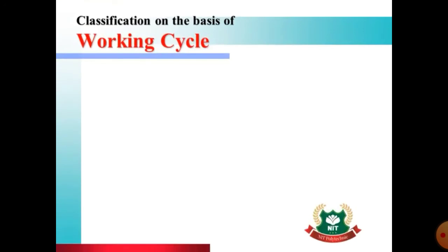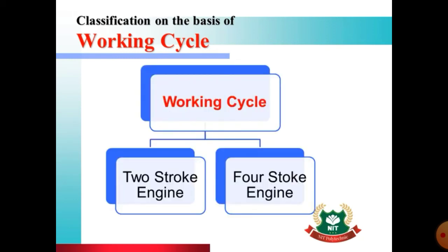On the basis of working cycle, engines are classified into two main categories: two-stroke engines and four-stroke engines. The movement of a piston from TDC to BDC or from BDC to TDC is known as a stroke. When two strokes of the piston are required to complete one working cycle, it is known as a two-stroke engine.